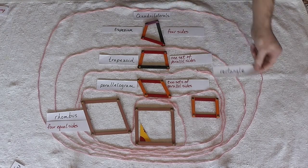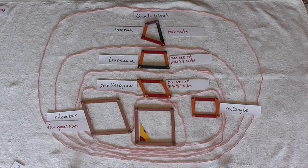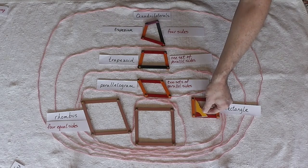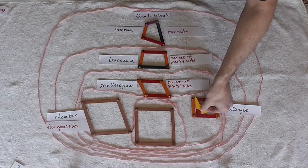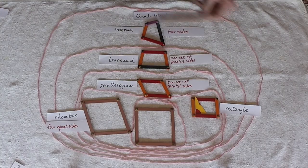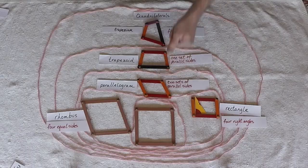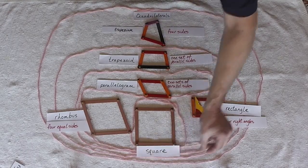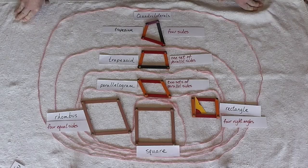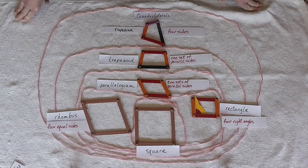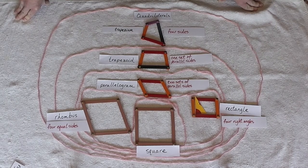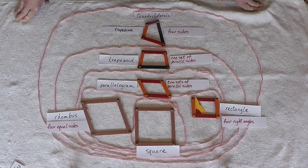We've got a rectangle over here. What do we know about our rectangle? It has the same characteristic as this shape here in that it has four right angles. So our rectangle has four right angles. We know what this shape is called. It's a square. Our square also has four right angles. So a square can be a rectangle. But can a rectangle be a square?